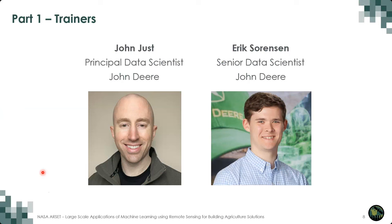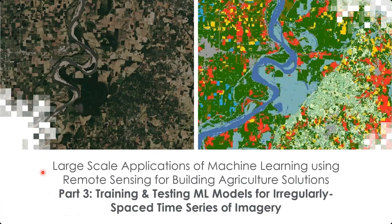I'm John, one of your trainers here. I'm a principal data scientist at John Deere and also affiliate faculty at Iowa State University. With me is Eric, who will be going over the code part of this session. I'm Eric Sorensen, a senior data scientist at John Deere. Welcome to the third part of this training series. In this one, we're going over the training and testing of machine learning models for the irregularly spaced time series of imagery.